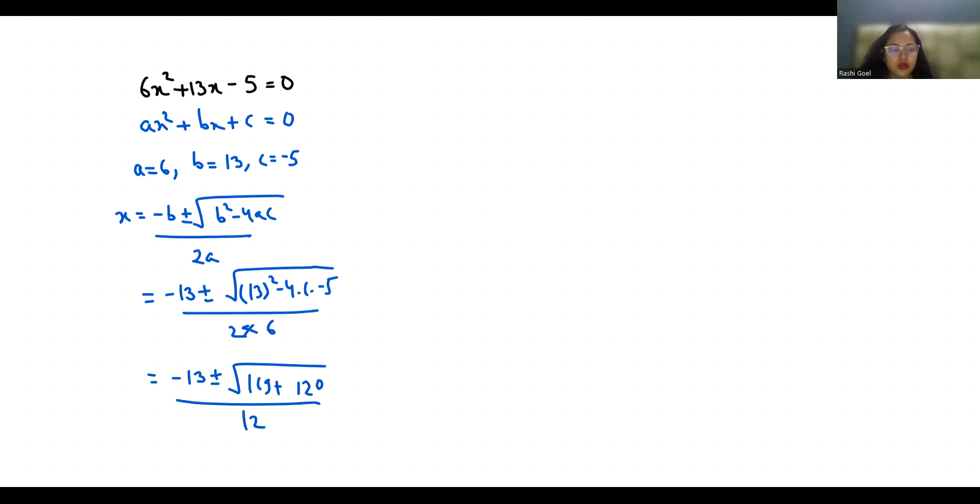So x equals minus 13 plus minus under root 169 plus 120 is 289, which is a square of 17. So under square root 289, in place of that we can write 17.